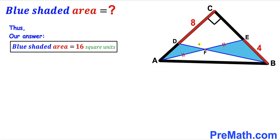So the area of this blue shaded region is 16 square units — that's our final answer. Thanks for watching and please don't forget to subscribe to my channel for more exciting videos.